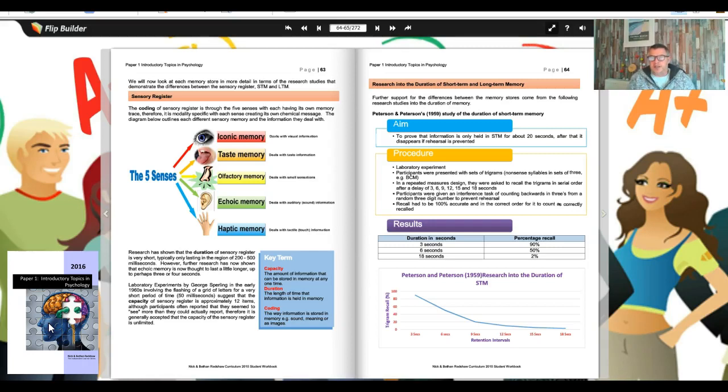In the specification, you need to be able to give the features of each store in terms of coding, capacity and duration. On page 64, you can find the research into the duration of short-term and long-term memory.